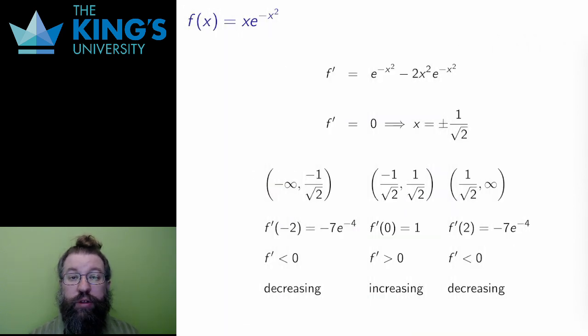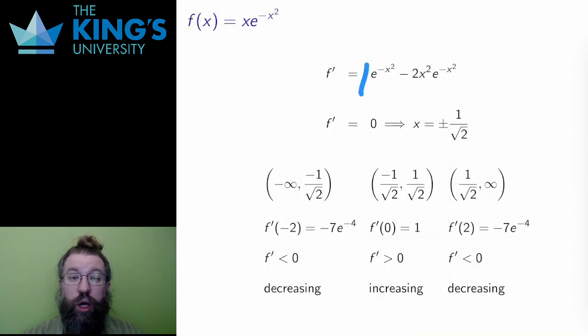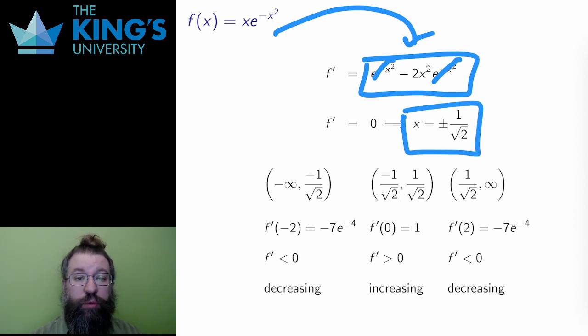Then I can look at the derivative. This is a product rule derivative with this result. So I set that derivative equal to 0, and I solve. The exponential part factors out, and so I solve 1 minus 2x squared equals 0, which has solutions x equals plus or minus 1 over root 2. The domain is all real numbers, so I split it up into three intervals. I test the derivative on each interval, using the points negative 2, 0, and 2.